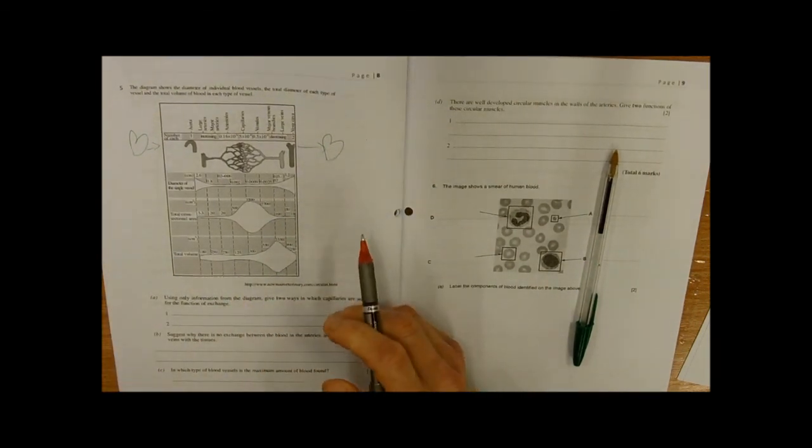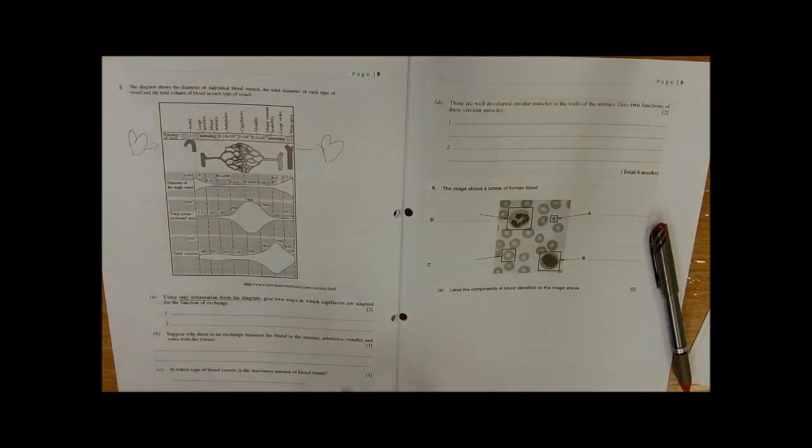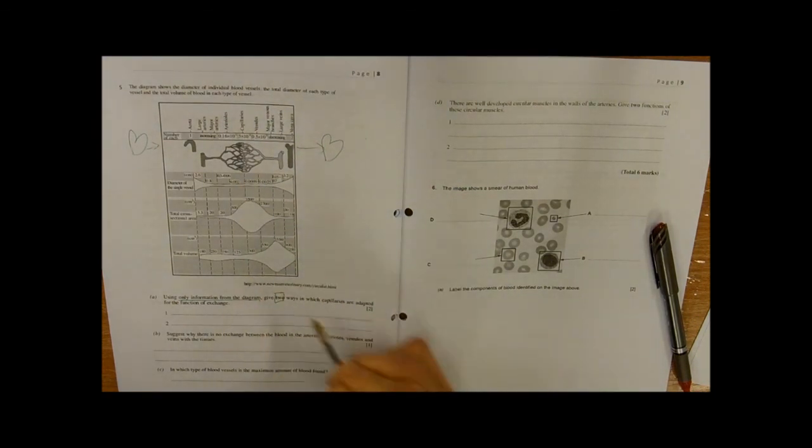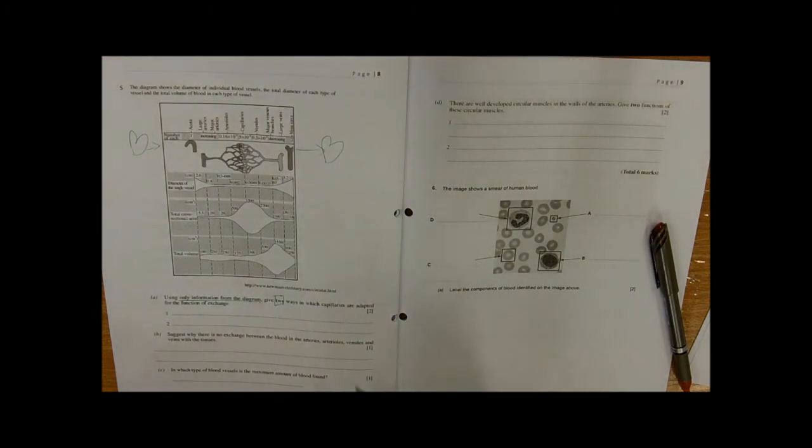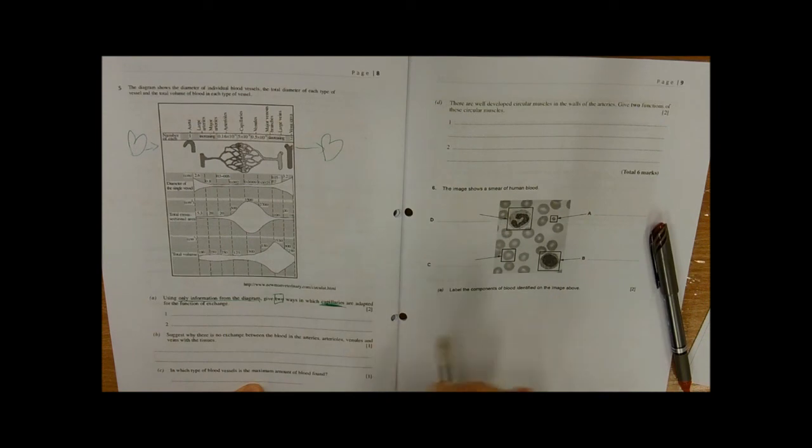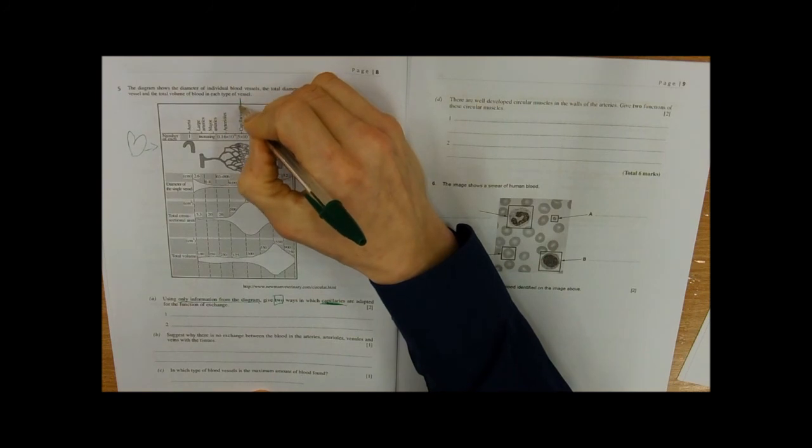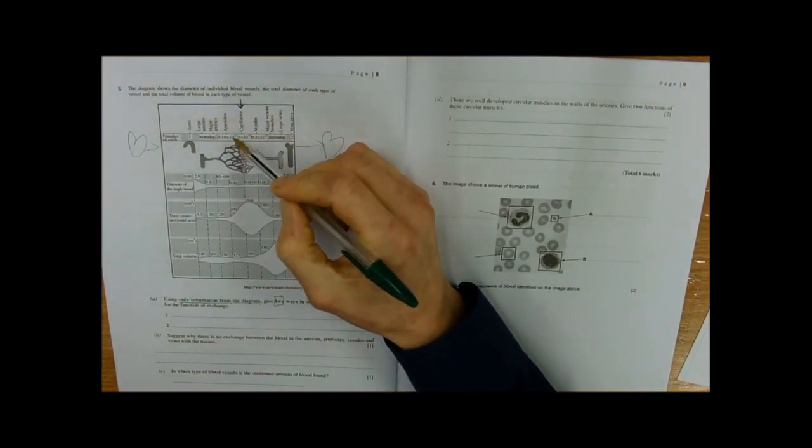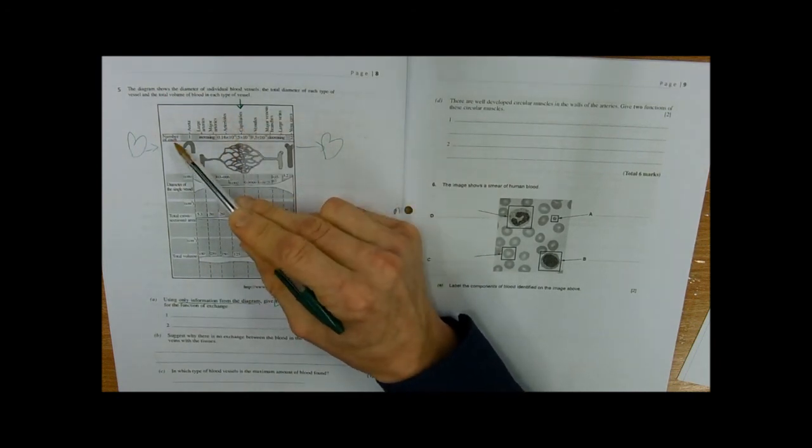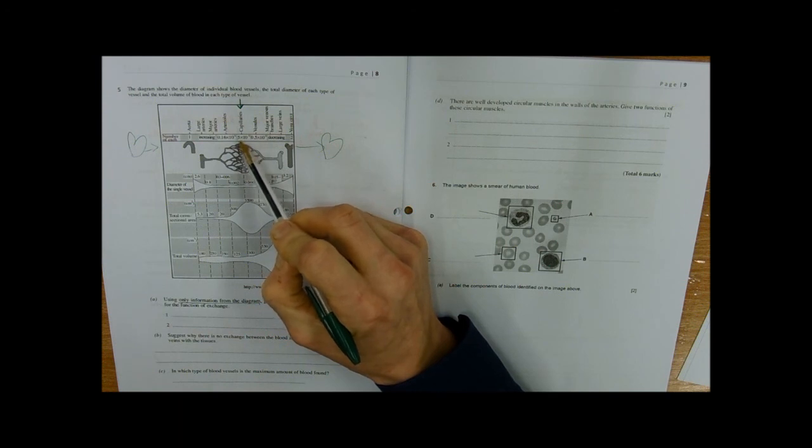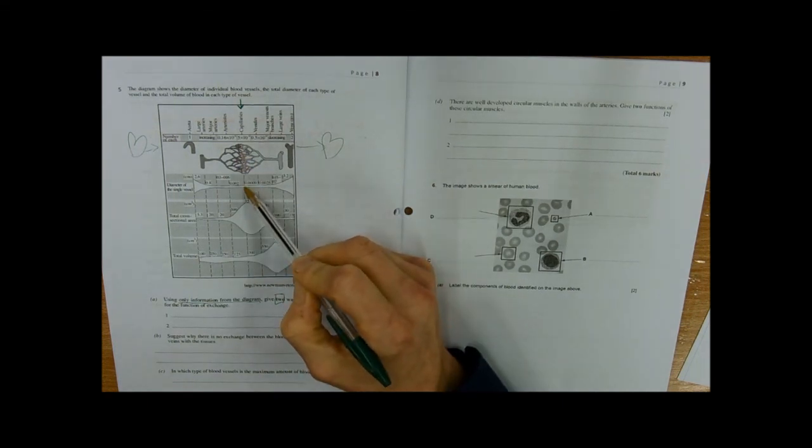Using only information in the diagram, give two ways in which the capillaries are adapted for the function of gas exchange. We need to go, right, where are the capillaries? That's where our capillaries are. We need to look at the data we've got. For the capillaries we've got a large number as represented there, we've got the smallest diameter, so thinnest, and we've got the largest cross-sectional area.